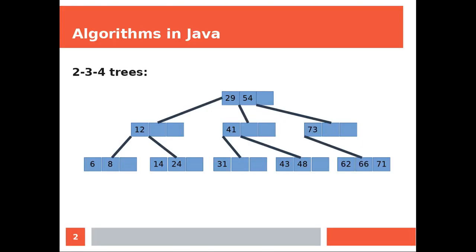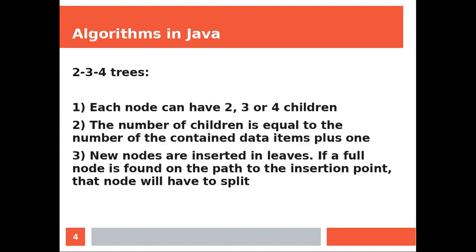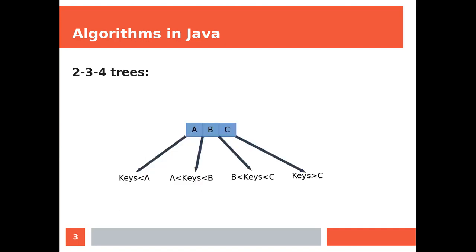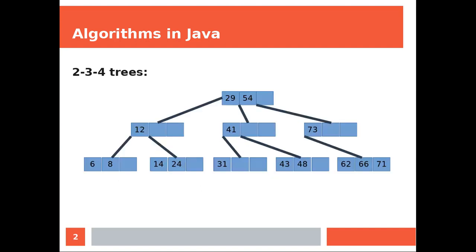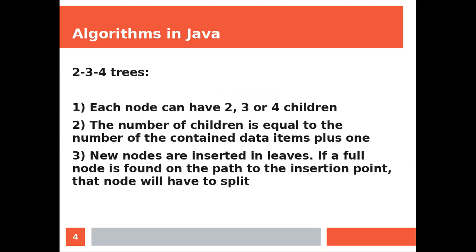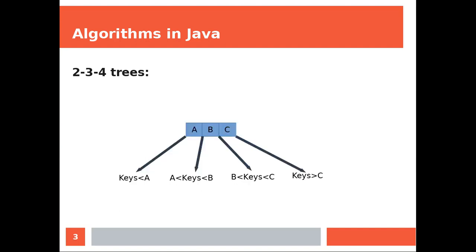This tree allows nodes to store multiple keys and to have multiple children. Each node can have two, three, or four children. The number of children is equal to the number of the contained data items plus one.